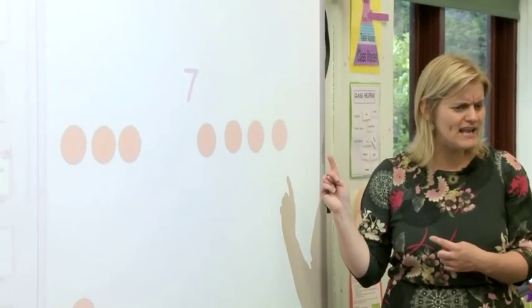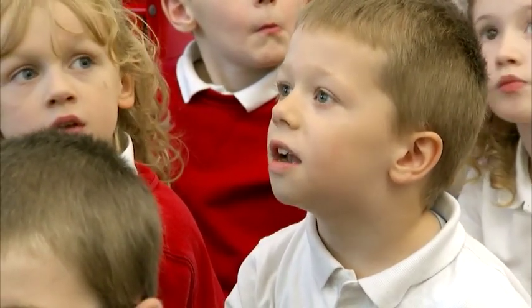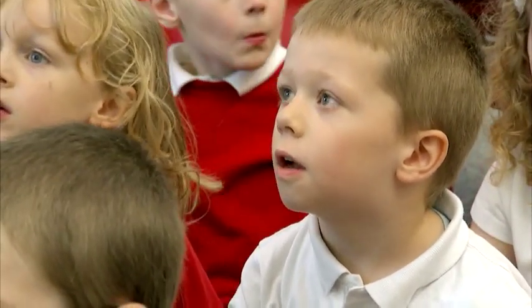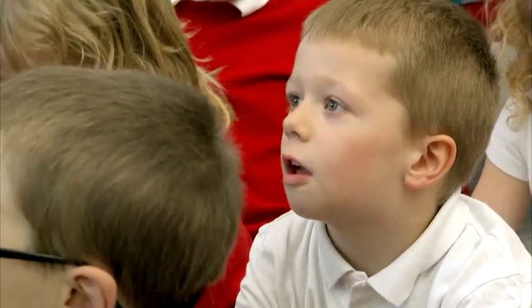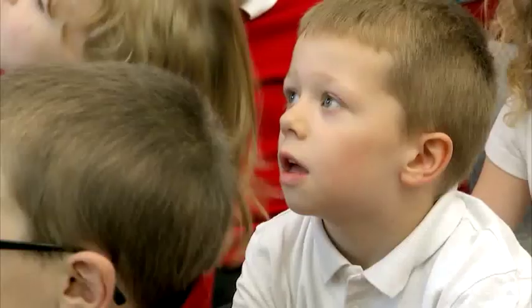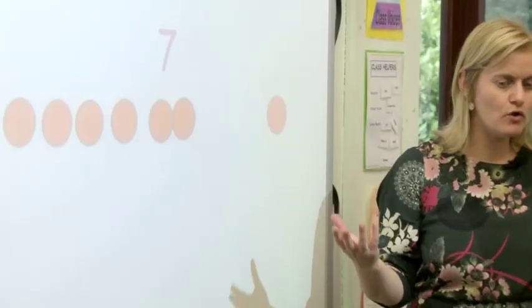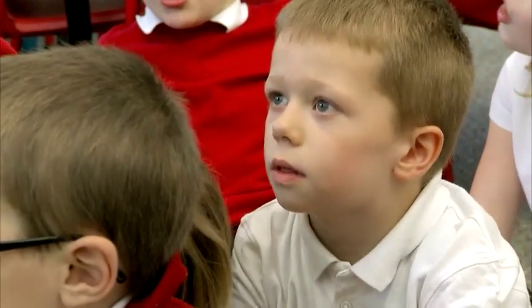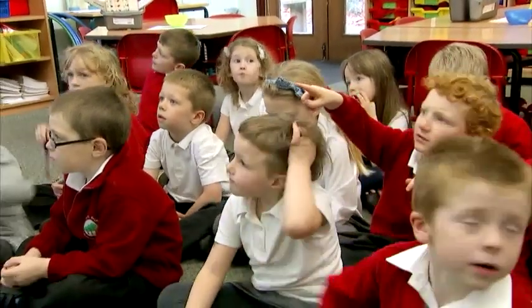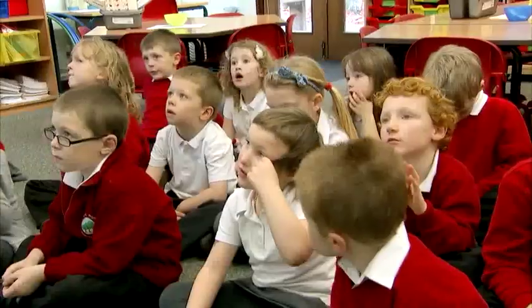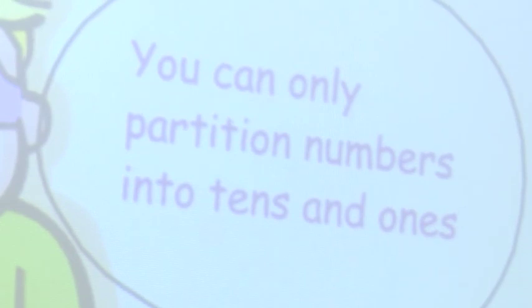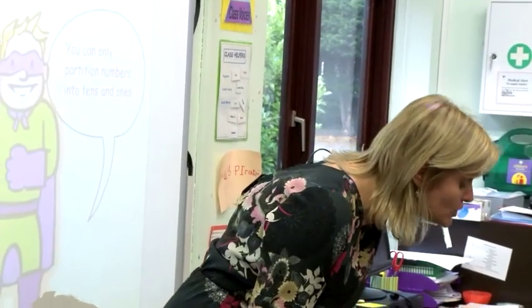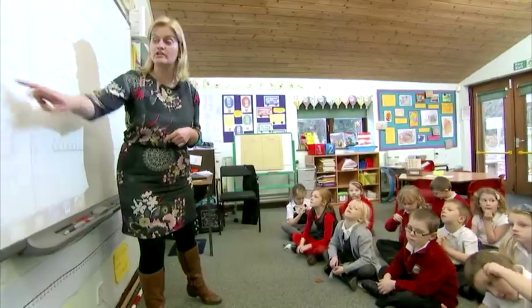What might I partition into next, Kenny? 4 and 3. Brilliant. So I move 1 across — 4 and 3. What would be next then, Kenny? 5 and 2. Brilliant. And the next one, Kenny? 6 and 1. Brilliant. So look at all those different ways I partitioned 7. Did I partition into 10s and 1s? No. But I did split the number up in lots of different ways. So was Captain Conjecture right? You can partition numbers into 10s and 1s, but that's not the only way you can partition them. And we're going to be using our partitioning to help us with our addition today.